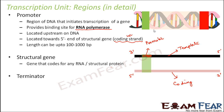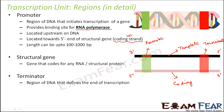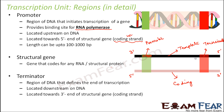The third region is the terminator, which defines the end of transcription. When RNA polymerase comes, it binds to the promoter, passes through the structural gene creating a copy of RNA, and when it reaches the terminator it gets a signal that this is the end of transcription — so the process stops. The terminator is located downstream on the DNA, towards the 3' end of the structural gene. So to summarize: 5' end has the promoter, 3' end has the terminator.